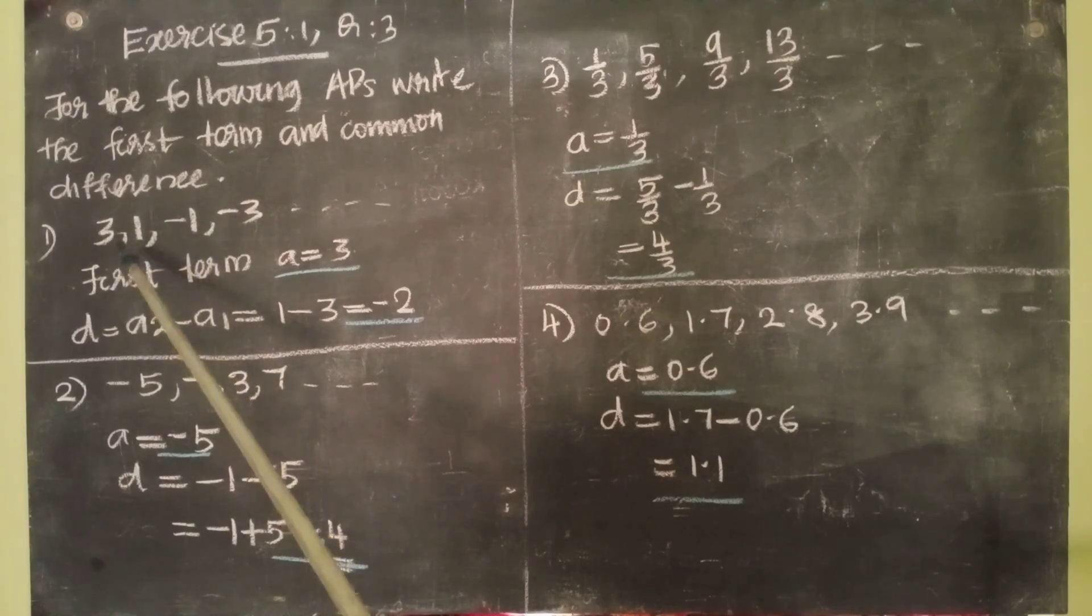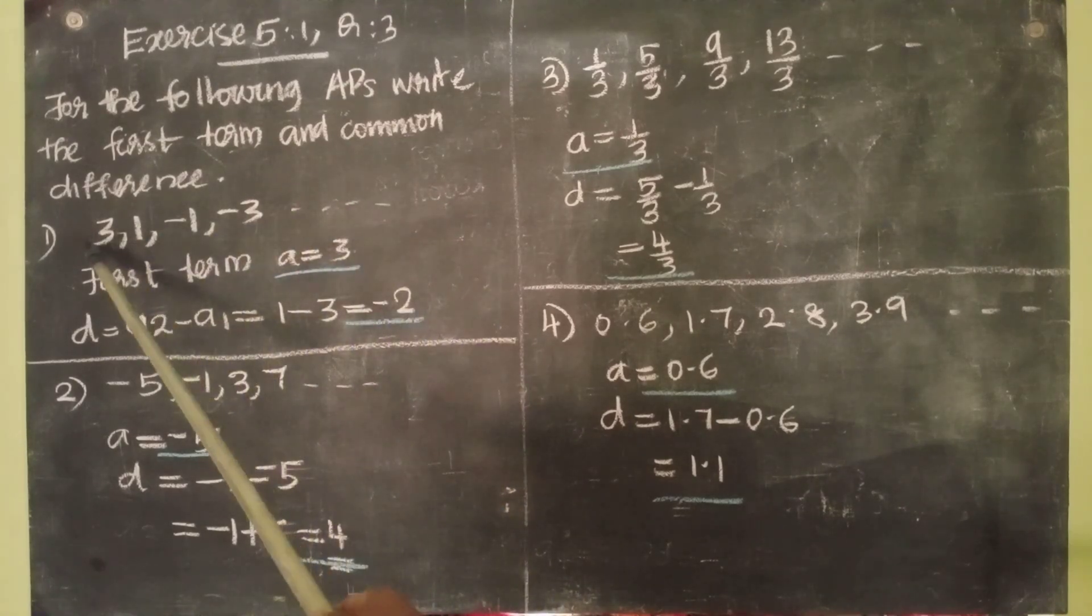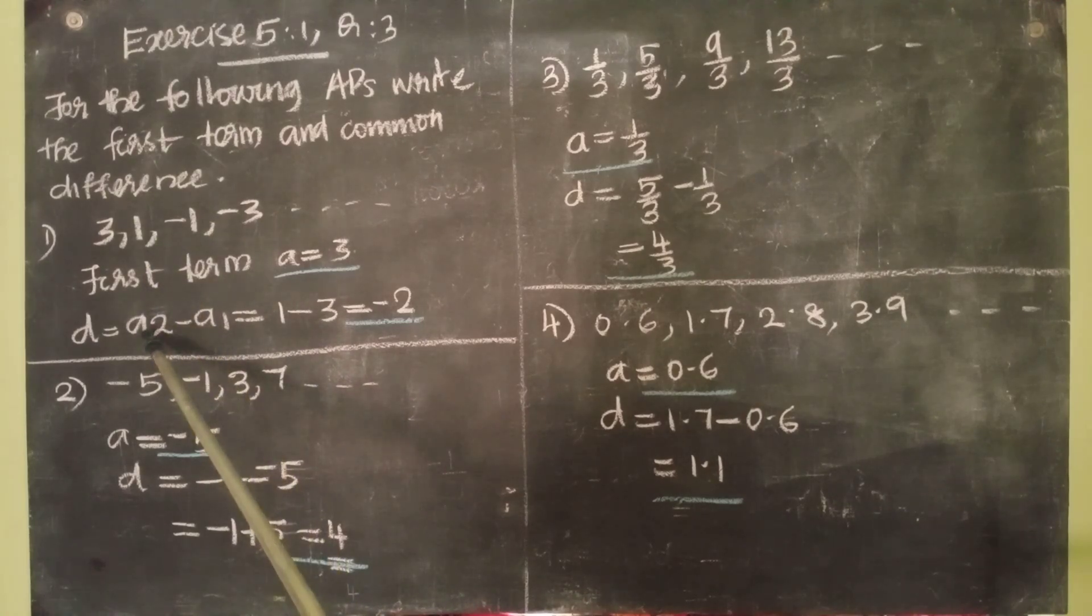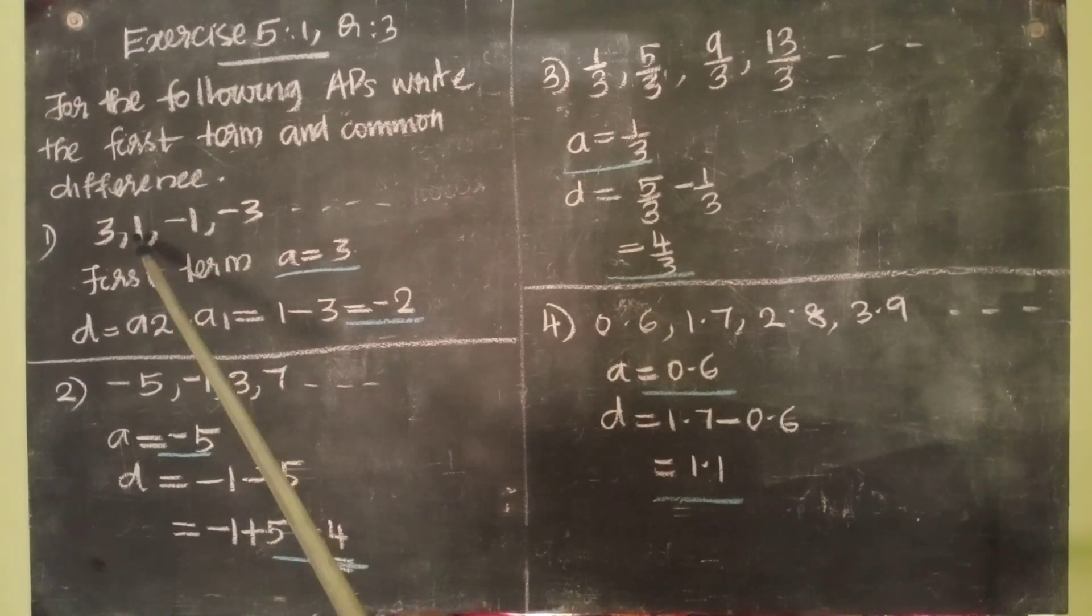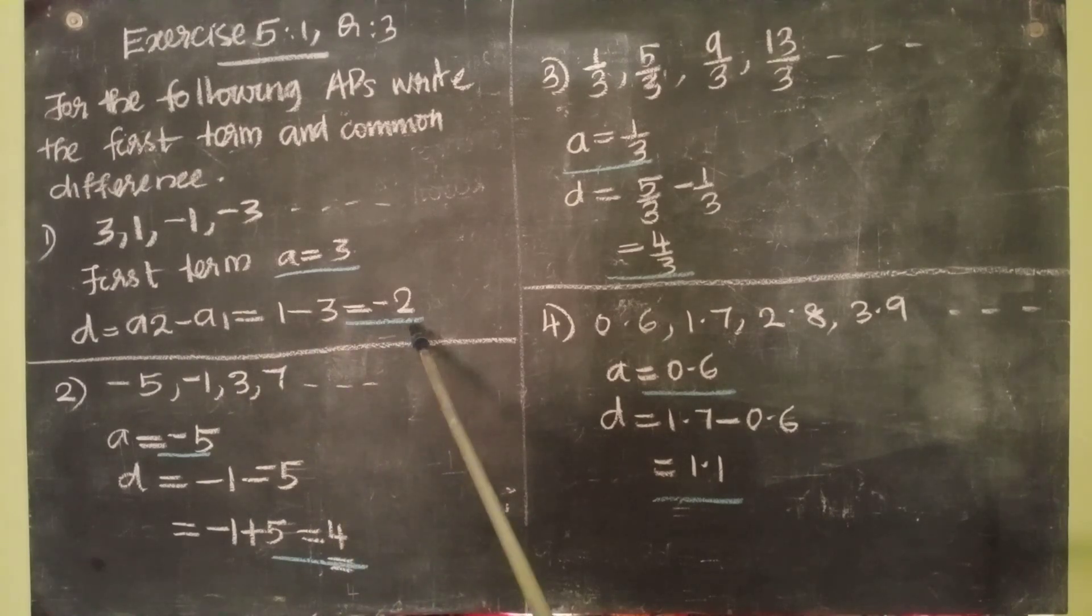First question: 3, 1, minus 1, minus 3, etc. First term A equal to 3. Common difference equal to A2 minus A1, that is second term minus first term. That is equal to 1 minus 3, that is equal to minus 2.